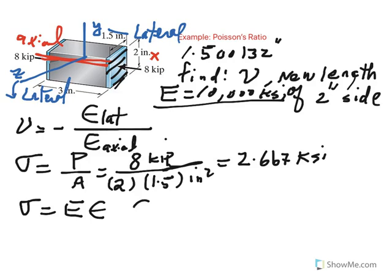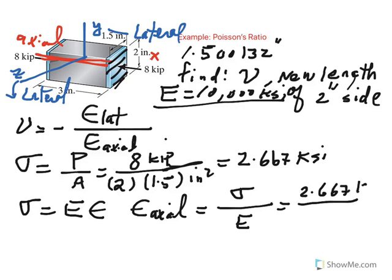In the axial direction, ε_axial, which is the direction of the load, would be σ that I just calculated divided by E. If I take the 2.667 KSI and divide it by the modulus of elasticity, which is 10,000 KSI, I have then the axial strain.